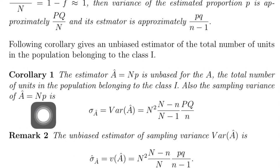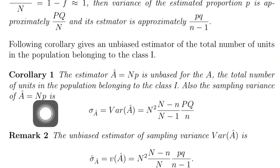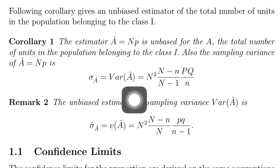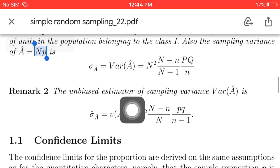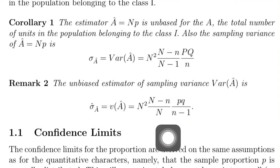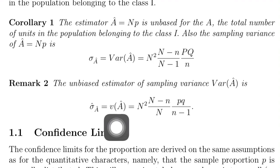So A-hat equals N times small p. The variance of A-hat is N squared times the variance of p, which equals N squared times N minus n divided by N, times p times q divided by n minus 1. Here capital V stands for the true sampling variance, and small v stands for the estimated sampling variance — that is the standard notation used.